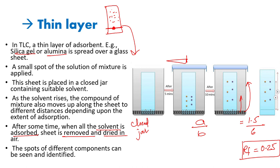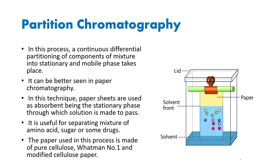Let's talk about partition chromatography. Partition chromatography is also called liquid-liquid chromatography because in this, both stationary and mobile phases are liquid. One phase is the water present in the pores of the paper, and the second is our solvent. In this process, a continuous differential partitioning of components of the mixture into stationary and mobile phase takes place.